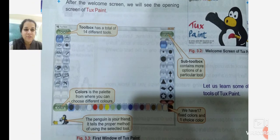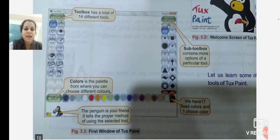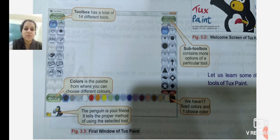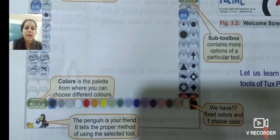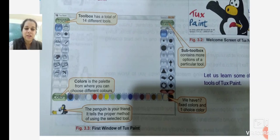After the welcome screen, you will see the opening screen of Tux Paint. The first screen has a toolbox, sub-toolbox with brushes, and a color palette. In the toolbox, you have many options. In brushes, you have many options to draw designs thick or thin — whichever size you want. You can choose many colors and draw your painting and color it.